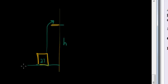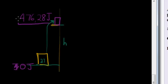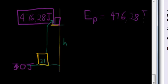Initially the potential energy is zero joules. And then it gains 476.28 joules, which means that when it is placed up here, this is its potential energy. In the end, the potential energy of that object is 476.28 joules.